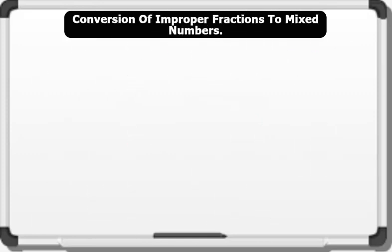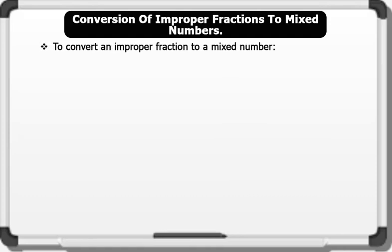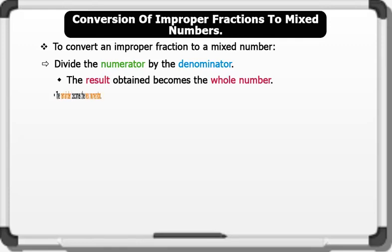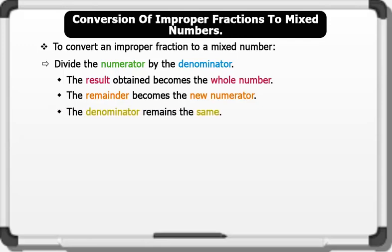Conversion of improper fractions to mixed numbers. In order to convert an improper fraction to a mixed number, we divide the numerator by the denominator. After the division, the mixed number is formed so that the result obtained becomes the whole number, the remainder becomes the new numerator, and the denominator remains the same. Let's see an example.